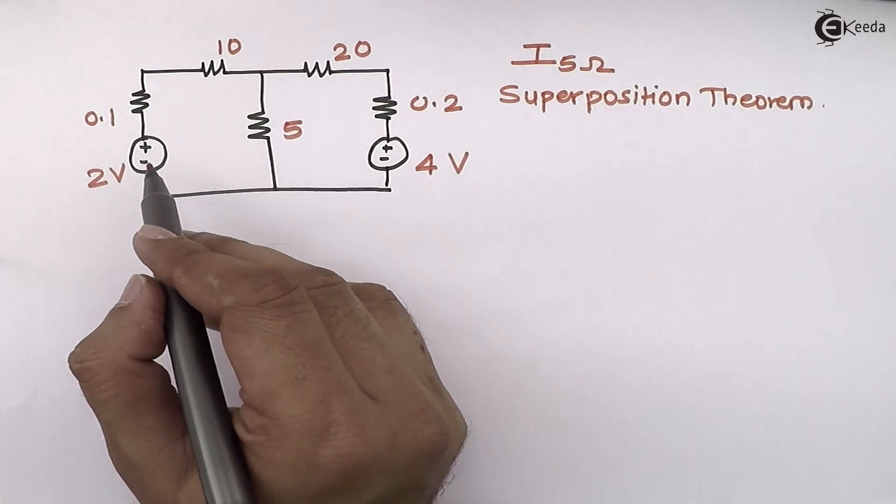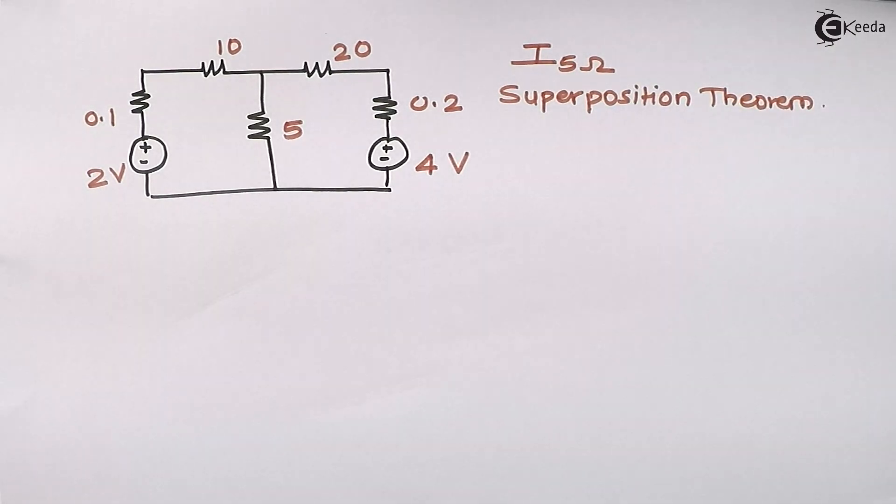Now I am having two voltage sources present in the circuit. As per the statement of superposition theorem, I need to consider one source at a time.